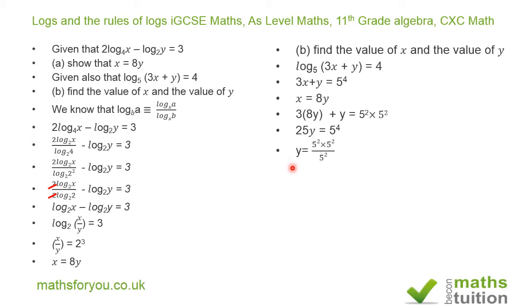If we divide both sides by 5 squared, we have y equals 5 squared times 5 squared divided by 5 squared. The 5 squares cancel out. So y equals 5 squared, or if you like, 25.